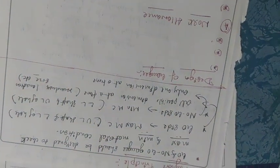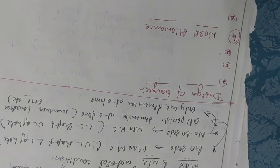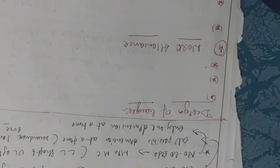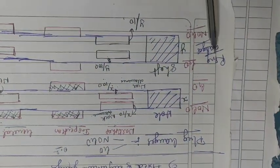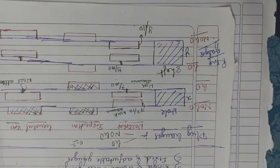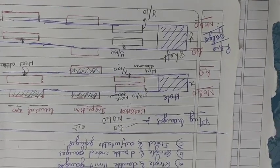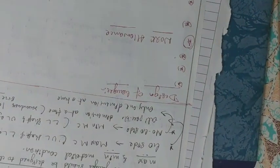Plug gauges are used to check cylindrical holes, while ring gauges — also called snap gauges — are used for checking shafts. Both plug gauges and ring gauges have go and no-go sides. This covers Taylor's Principle and the classification and brief explanation of different types of gauges. Next, we will discuss the design conditions for gauges.